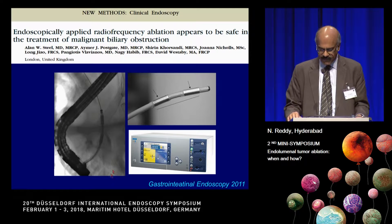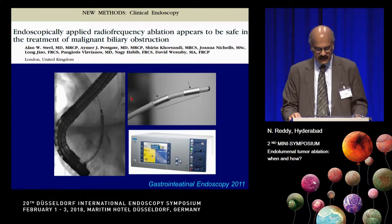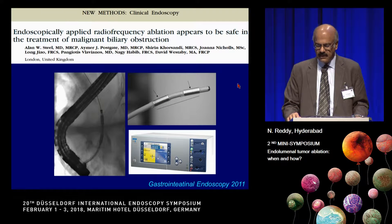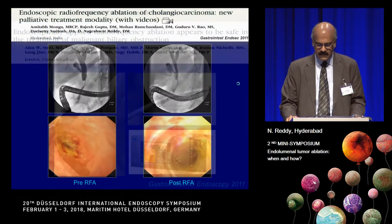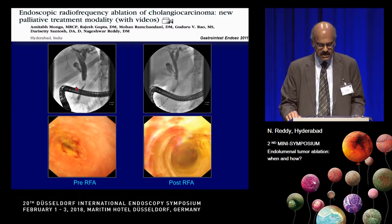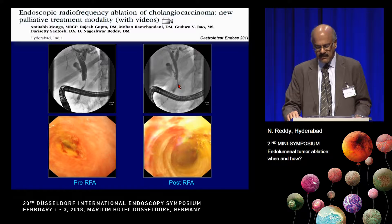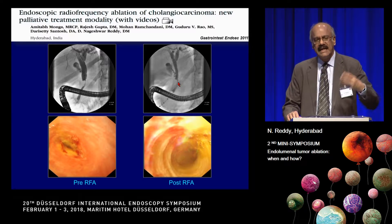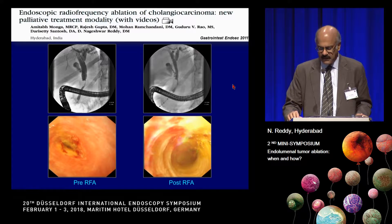The first studies came from London, where Nagi Habib's group used this technique. They used a catheter with two electrodes, and the early studies demonstrated not only efficacy but proof of concept that this was working. The results can be quite dramatic — you can see the stricture here with cholangiocarcinoma; the cholangioscope shows the stricture opening up almost immediately. Furthermore, these strictures become very soft after RFA, making subsequent dilation much easier.